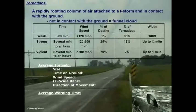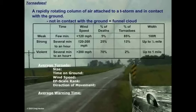Tornadoes are one of the most violent and focused forms of severe weather. By definition, all a tornado is is a rapidly rotating column of air attached to a thunderstorm and in contact with the ground. If that rotation doesn't extend all the way to the surface, we call it a funnel cloud. The major difference being that if a funnel cloud passes over an area, because that rotation doesn't reach the ground, there's not very much damage that will occur.